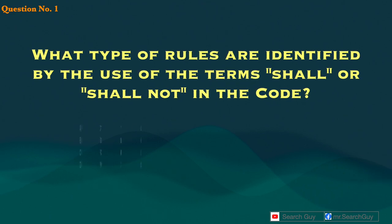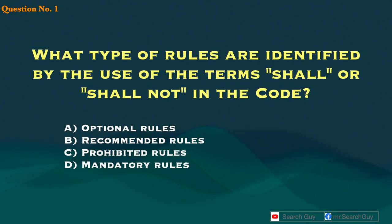Question 1. What type of rules are identified by the use of the terms 'shall' or 'shall not' in the code? A. Optional rules. B. Recommended rules. C. Prohibited rules. D. Mandatory rules.